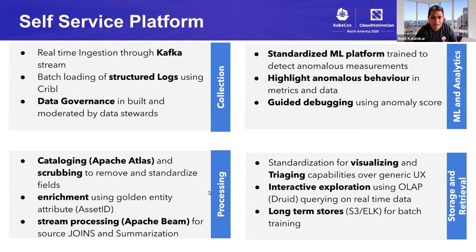For processing, we do real-time processing using Apache Beam. We have cataloging using Apache Atlas. We want to make sure everything is cataloged and discoverable for folks who want to use this data. We also provide enrichment using golden entity. We use asset ID in our case. On analytics side, we created a standardized ML platform trained to detect anomalous behavior in any stream of data that enables us to provide a guided debugging option. All this data is stored in long-term store S3 and ELK for batch training.